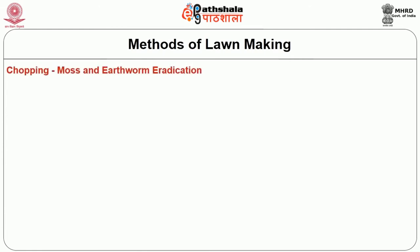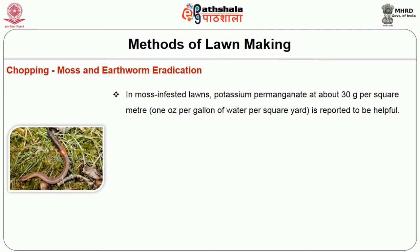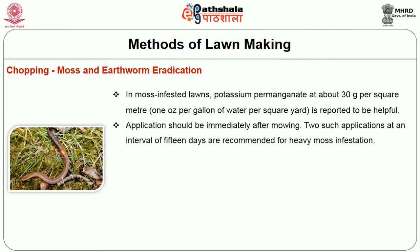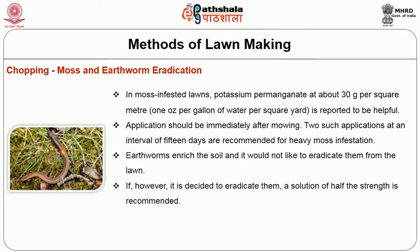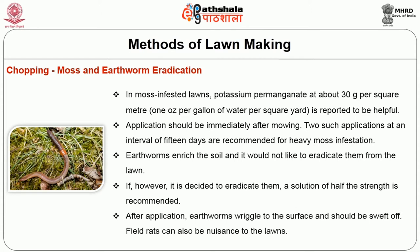Moss and earthworm eradication. In moss-infested lawns, potassium permanganate at about 30 grams per square meter is reported to be helpful. Application should be done immediately after mowing. Two applications at an interval of 15 days are recommended for heavy moss infestation. Earthworms enrich the soil and you may not want to eradicate them from the lawn. If however it is decided to eradicate them, a solution of half the strength is recommended. After application, earthworms wriggle to the surface and should be swept off. Field rats can also be a nuisance to the lawns.